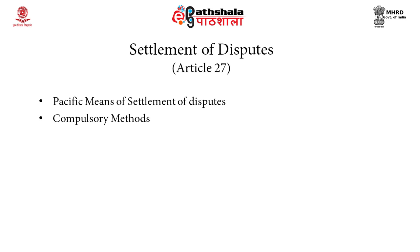The CBD lays down a comprehensive procedure for the settlement of disputes between member states. Article 27 of the Convention on Biological Diversity 1992 says that in the event of a dispute between contracting parties concerning the interpretation or application of this convention, the parties concerned shall seek solution by negotiation. If the parties concerned cannot reach agreement by negotiation, they may jointly seek the good offices of or request mediation by a third party. The party can also resort to compulsory dispute settlement mechanisms such as arbitration or submission of the dispute to the International Court of Justice. Thus, the Convention talks about both peaceful as well as compulsory methods of dispute settlement.